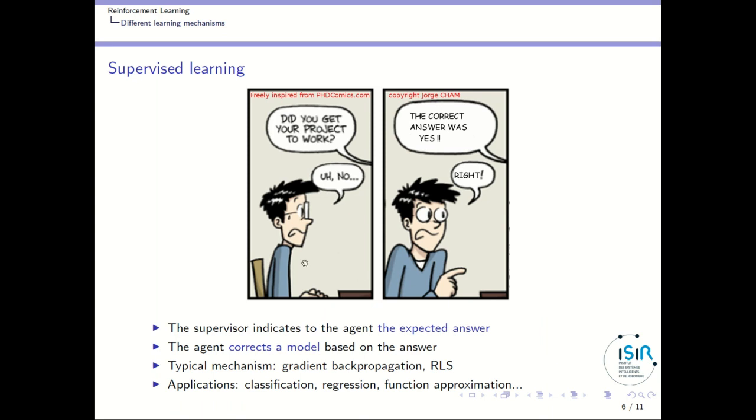So imagine you have an agent. This is this student, for instance, these poor students. And this agent has an environment. Here, the environment is the student supervisor. And the environment is asking the agent a question or setting a problem. The question is, did you get your project to work? And the agent must answer something. And he may try different answers. Here, the agent tries, no, I didn't.